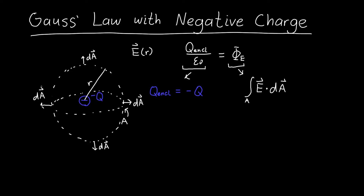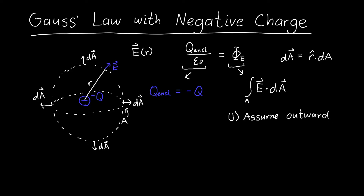But what about the electric field? You could write dA as r̂ times dA, pointing out in the radial direction. We're going to do this problem two different ways. The electric field has to have spherical symmetry, so we expect it will either be pointing outward or inward. I happen to know that for negative charges the electric field always points inward, but let's first assume it points outward and see what happens.